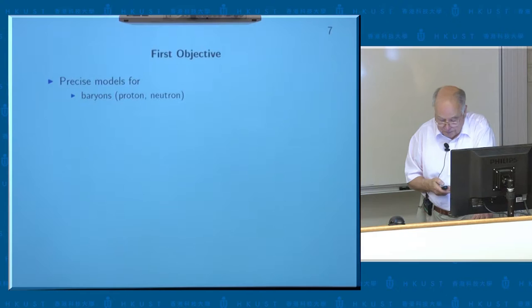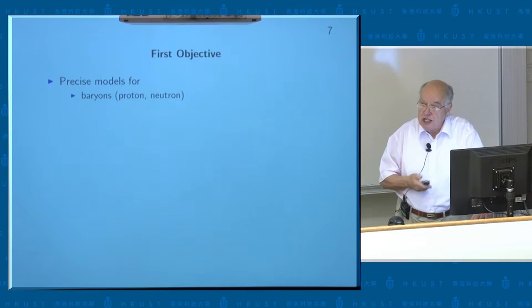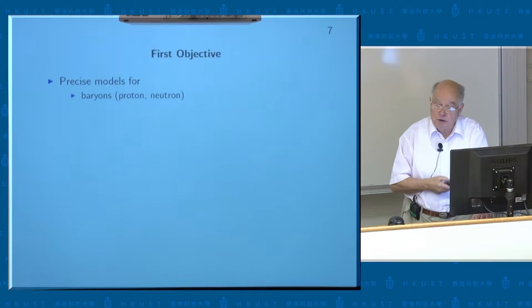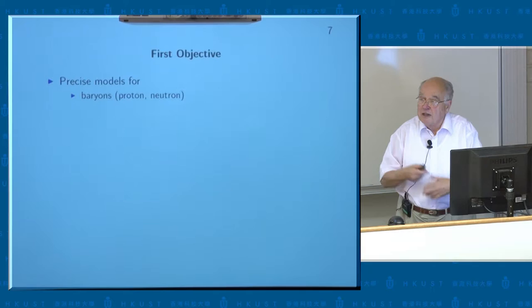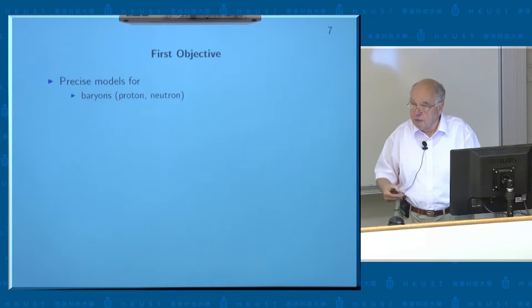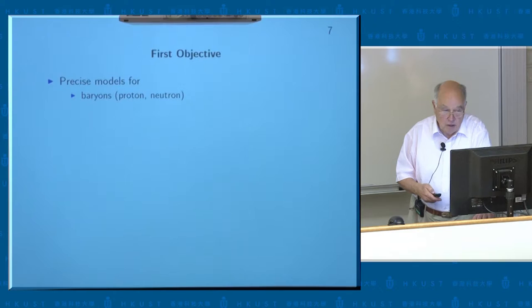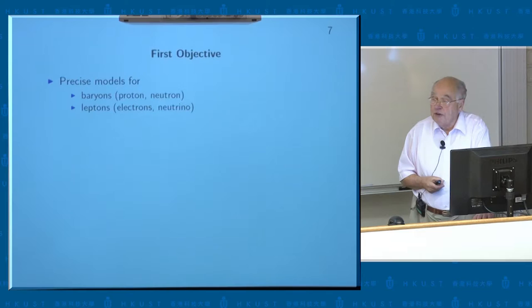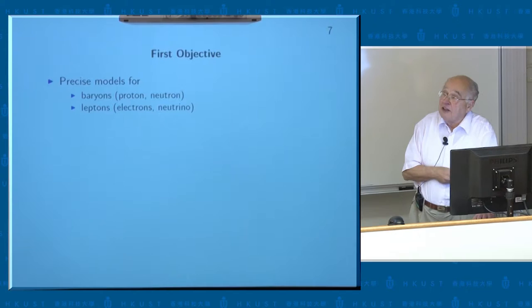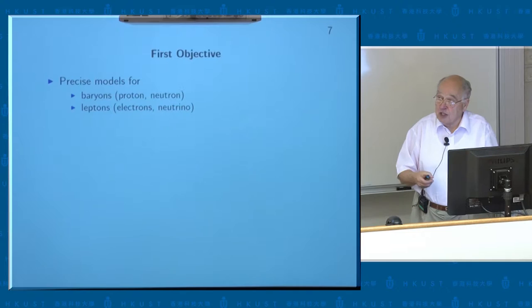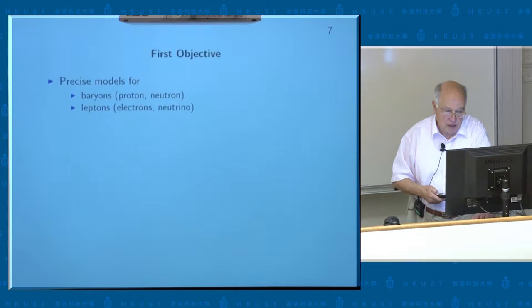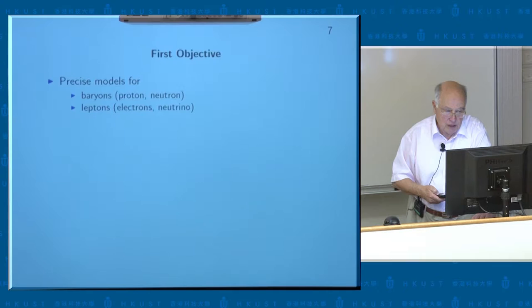The first objective of this investigation is: if you go to this other picture, we want to get more than the Skyrme model — we want precise models for the basic particles. So we want models for a single proton and single neutron, and we want them to be different. In the Skyrme model there's no difference — the soliton with degree one is the proton or the neutron, you can't tell, there's no electric charge built in. But now we've built in charge and so we can ask for a different model for the proton and the neutron. Secondly, we're not going to have a model only for baryons as in the Skyrme model — our model should also include leptons, things like the electron and the neutrinos. This is a more ambitious model; it improves on the Skyrme model by incorporating electric charge and also incorporates leptons.